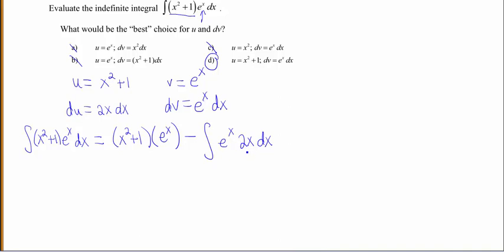But we still have a product in here, e to the x times 2x dx. Oh, great, we're gonna have to do integration by parts again. Okay, but that's all right, we need the practice. So I'm gonna rewrite my first piece. And then just because I like to pretty things up a little bit, I'm gonna pull this 2 out front of my integral. So I'm gonna have minus 2 and then the integral of x e to the x dx. Just so it kinda looks like the one I started with, not really.